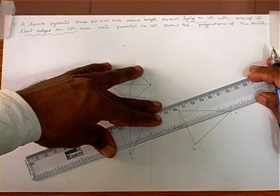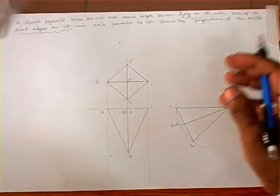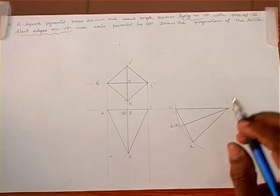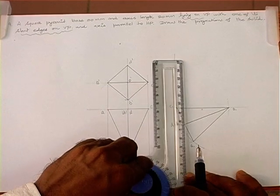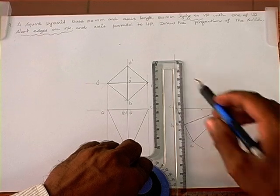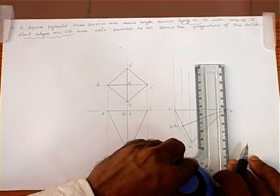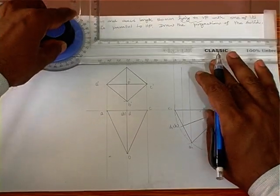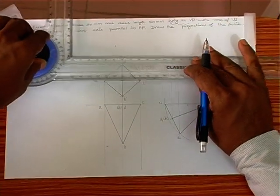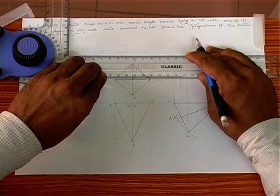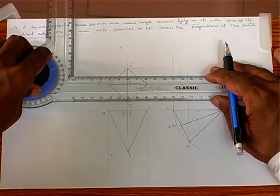Now we get the final top view of the square pyramid resting on VP with one slant edge lying on VP. We project this to get the final front view. Through C draw one projection line, through B and D draw another line, through A draw another line, and through O draw a projection line. The horizontal projections are also made from these points.